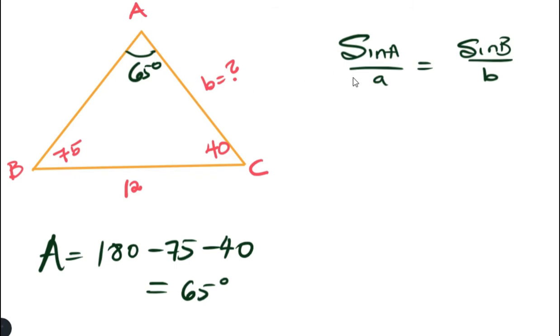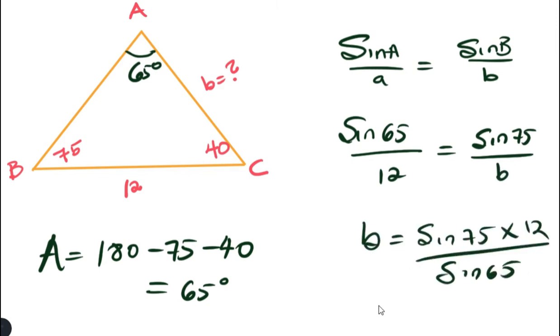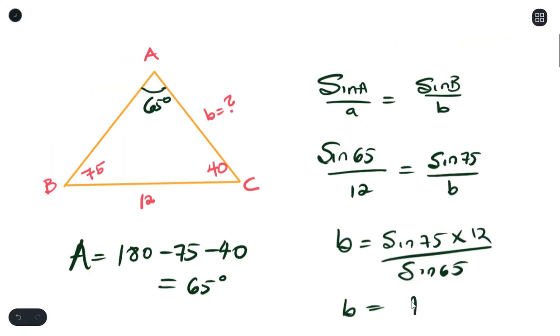So now since we are trying to get B, that's why we have sin B over b. And the pair that we have is sin A over a. So we just substitute. Then by cross-multiplying, so therefore B would be 12.79 units. Okay, so that's it.